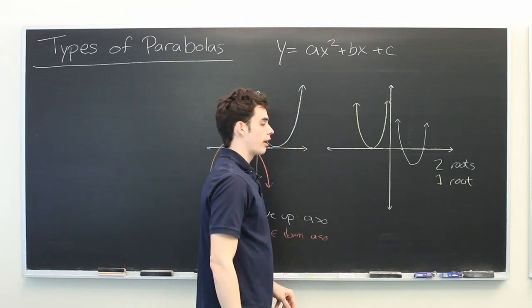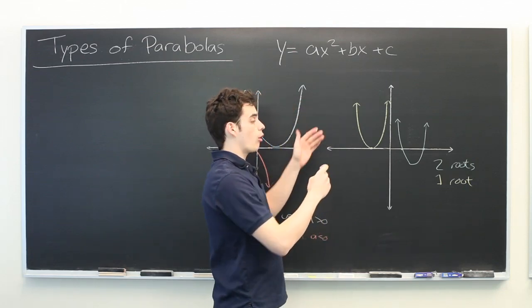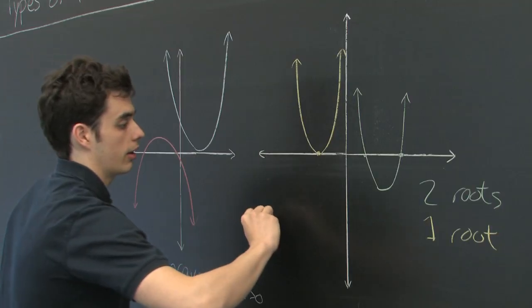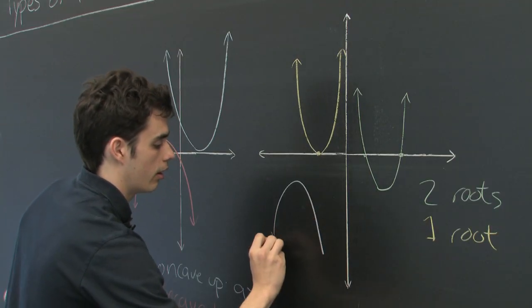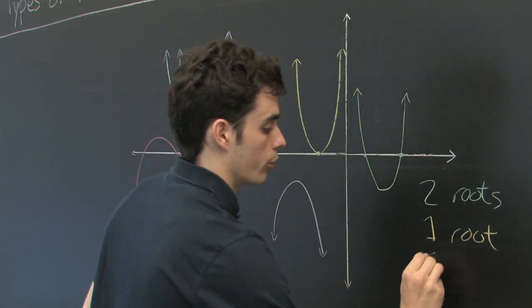Finally, if the entire parabola is either above or below the x-axis, there are zero real roots.